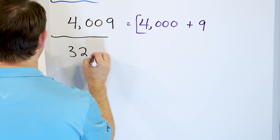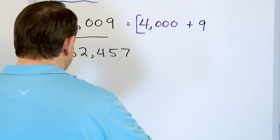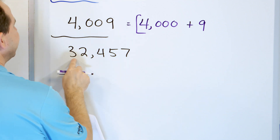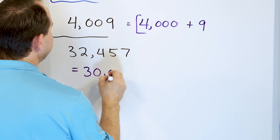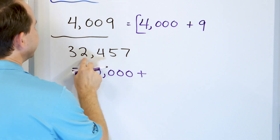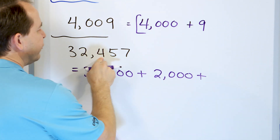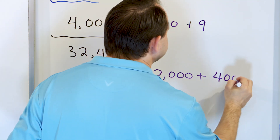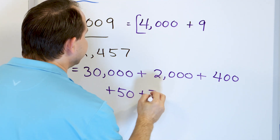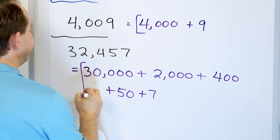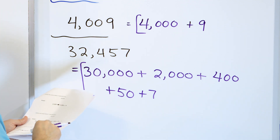What about 32,457? What is expanded form for this one? Well, the 3 is in the ten-thousands place, which means we have three of them, so it's worth 30,000. The 2 is in the thousands position, so it's worth 2,000. The 4 is in the hundreds, which means it's worth 400. The 5 is in the tens, which means it's worth 50, and then plus 7 because that's just in the ones place. So we have 30,000 plus 2,000 plus 400 plus 50 plus 7.